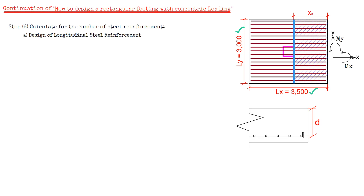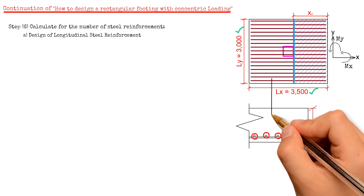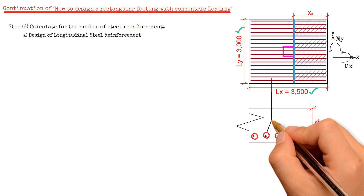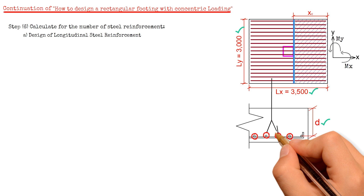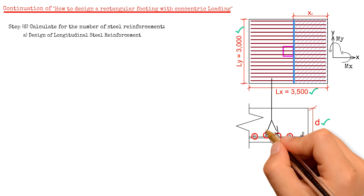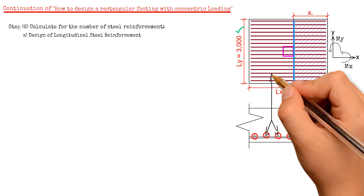Because the bars in one direction rest on top of the bars in the other direction, the effective depth D varies with the diameter of the bars used. Take note that the placement of the longitudinal steel reinforcement, as shown in the diagram, is resting at the top of the other reinforcement and is parallel to the longer direction.